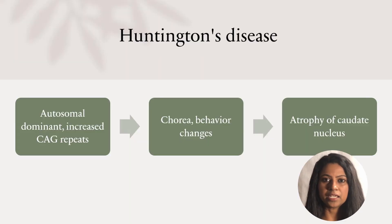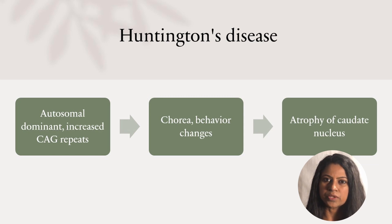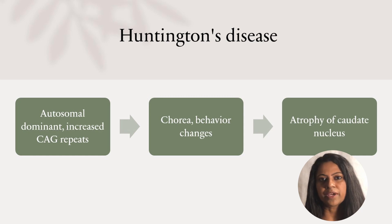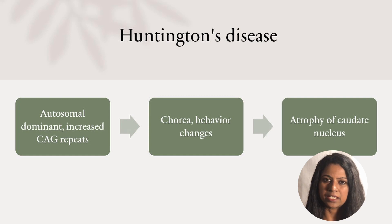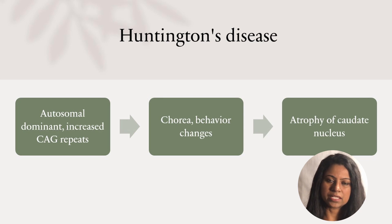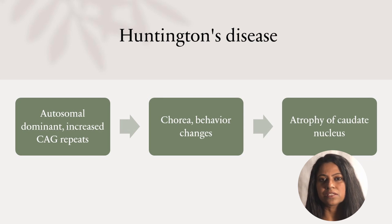Huntington's disease is an inherited autosomal dominant condition characterized by dementia, along with abnormal jerky twitching movements called chorea, and emotional, behavioral, and personality changes. It is caused by mutations in the Huntingtin (HTT) gene, which leads to an abnormal number of CAG (cytosine, adenine, and guanine) repeats. There is atrophy of the caudate nucleus and a reduction in the levels of GABA, acetylcholine, and glutamate in the brain.